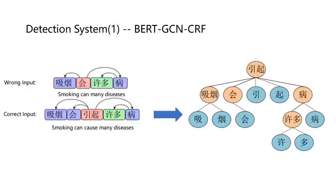We first introduce the BERT-GCN-CRF model. The dependency of the words is an important feature of this task. The following case shows this situation. The difference between the wrong input and correct input is that one word is missing. From the perspective of the dependency tree, it actually means that one node is missing on a certain subtree.